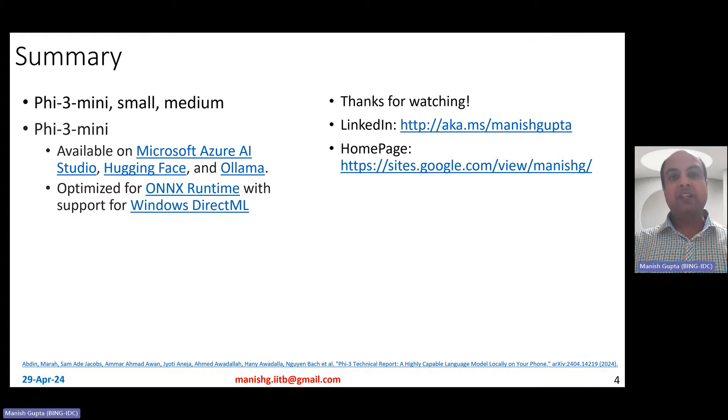So in summary, in this video I talked about Phi-3 series of models, Phi-3 mini, Phi-3 small, Phi-3 medium. Phi-3 mini is basically available on Hugging Face. It's also available on Microsoft Azure AI Studio and Ollama. Optimized versions for ONNX runtime with support for Windows DirectML are also available. That's it for this video. Thank you for watching. Connect with me on my LinkedIn or look at my research on my homepage. Thank you.